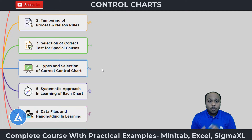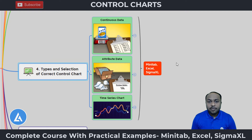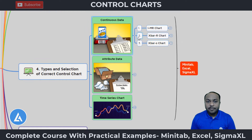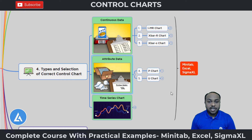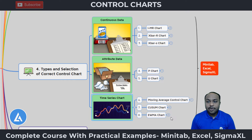In part four, after understanding the basics, we learn the different types of control charts and how to select the correct one based on your data and application. For continuous data, the three main charts are the Individual Moving Range chart, X-bar R chart, and X-bar S chart. For attribute data, the two main charts are the P chart and U chart. Additional charts for detecting small shifts include the Moving Average, CUSUM, and EWMA charts, all demonstrated with practical examples in Minitab, Excel, and SigmaXL.